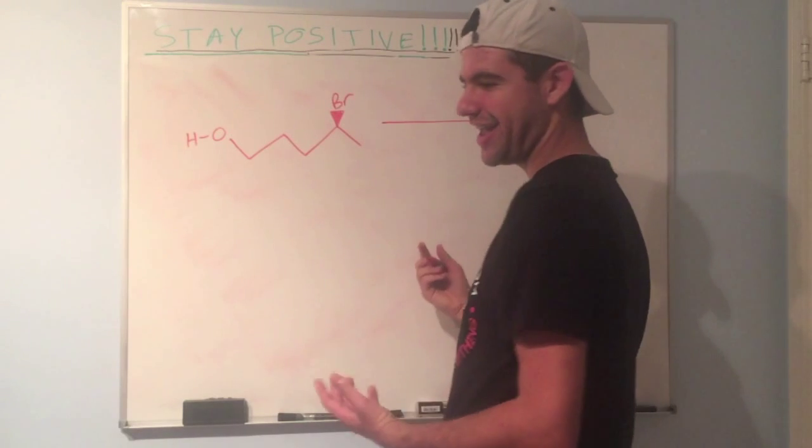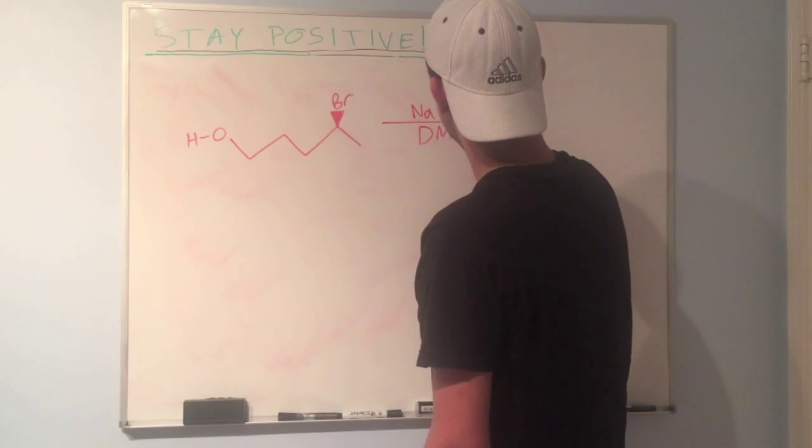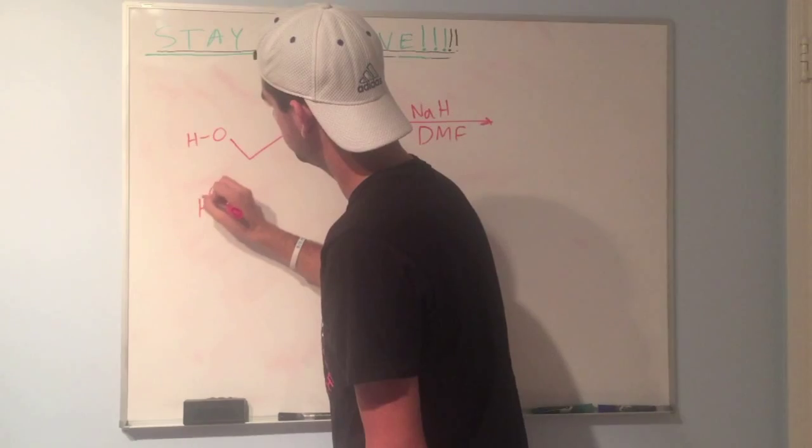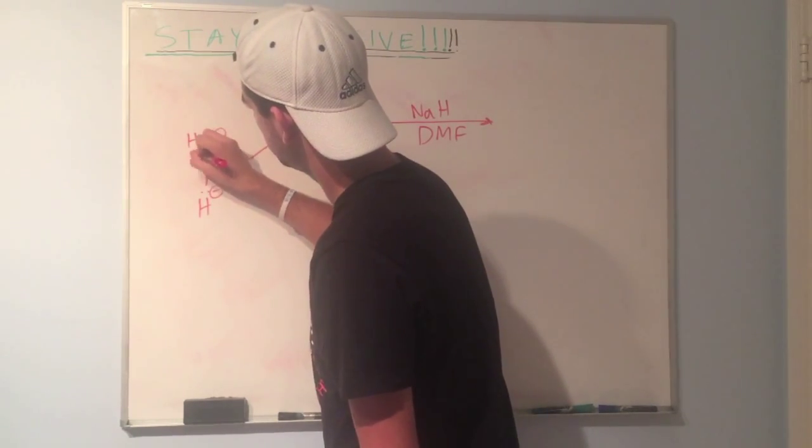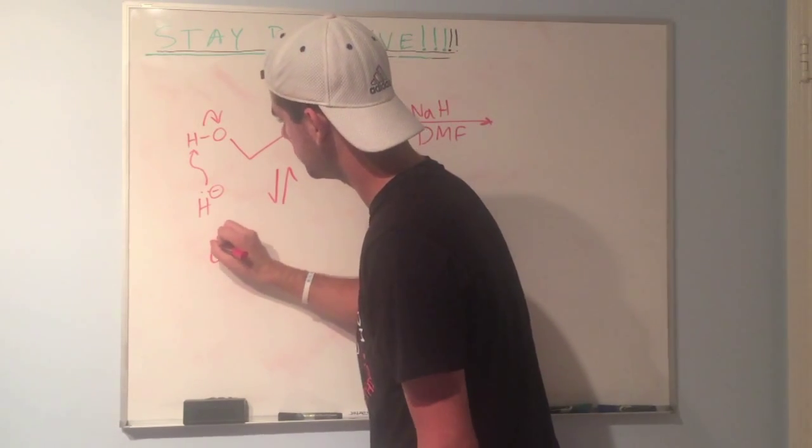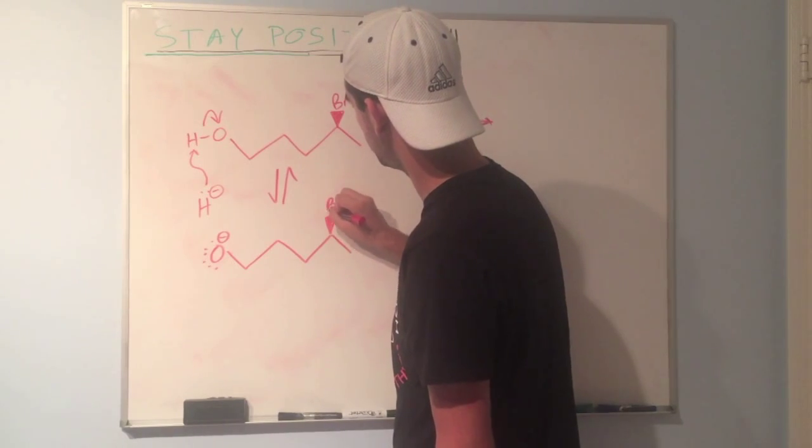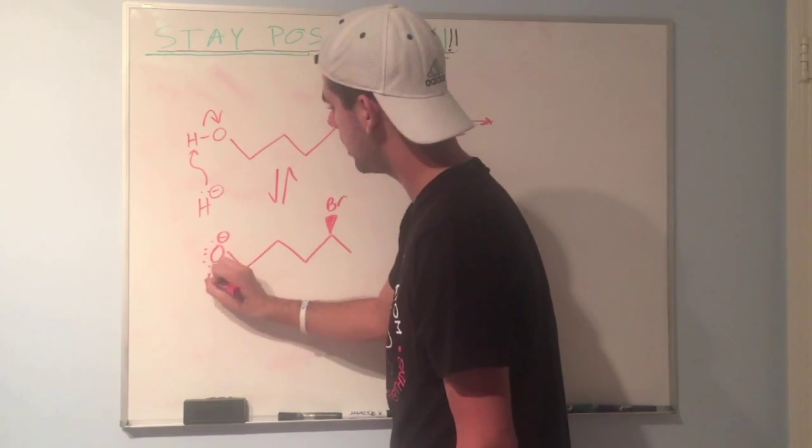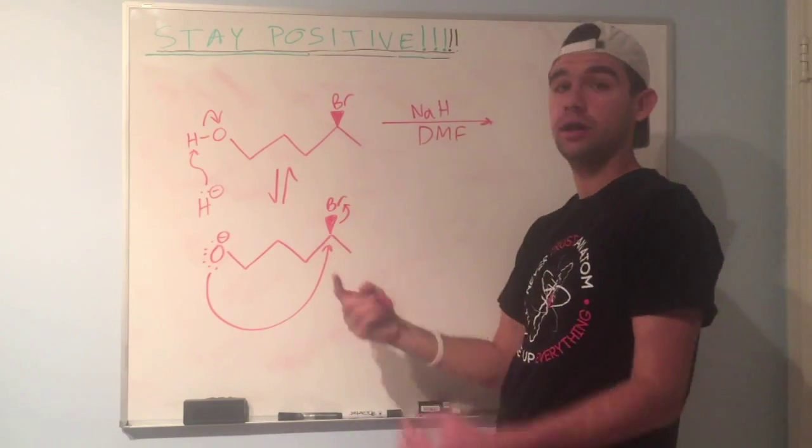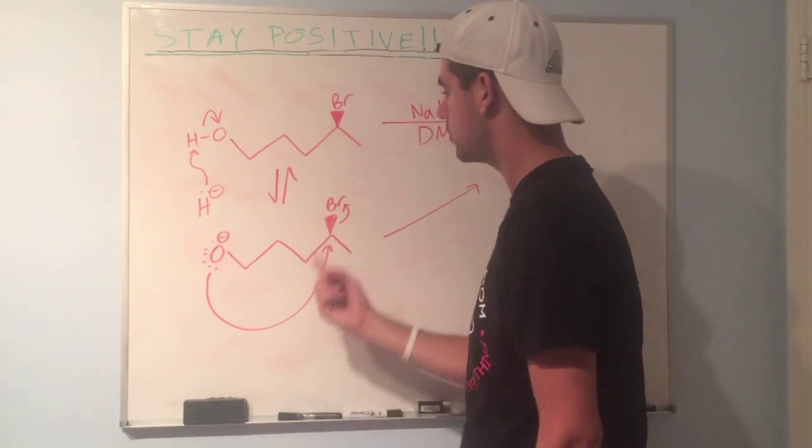Let's react this with some NAH and DMF. NAH will deprotonate this oxygen. So that'll give us oxygen with a negative formal charge. And now we have an electrophilic carbon with a good leaving group attached. So the oxygen will attack. And this time the intramolecular reaction will form a closed ring, a new closed ring.